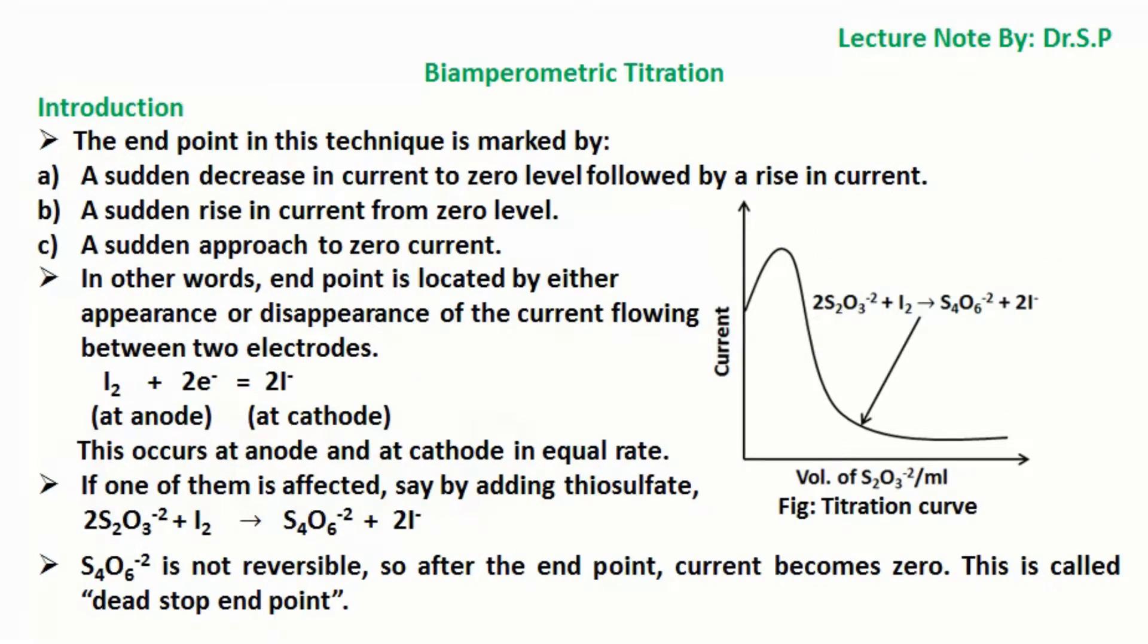The end point in this technique is marked by: a sudden decrease in current to zero level followed by a rise in current, a sudden rise in current from zero level, and a sudden approach to zero current. In other words, end point is located by either appearance or disappearance of the current flowing between two electrodes.